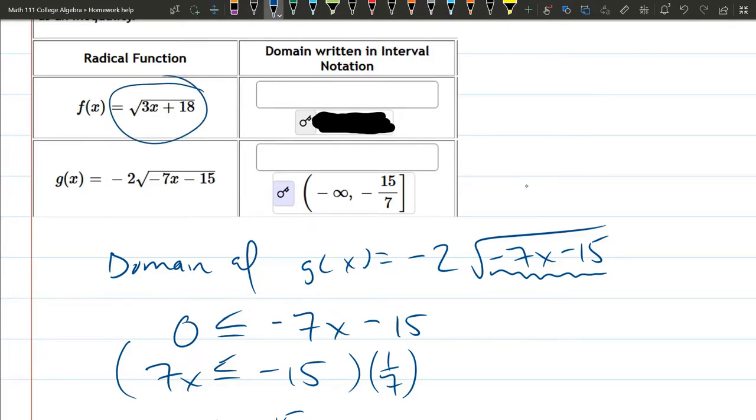You could do the first part the exact same way and all you would do on that is you would just put the 3x plus 18 right here and then solve for x, and I'd probably start by subtracting 18 on both sides and then multiplying by 1/3.